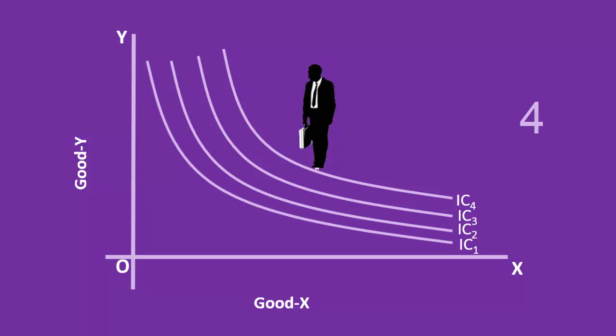An indifference curve that lies to the left of a given indifference curve represents a lower level of satisfaction. IC1 gives less satisfaction than IC2.